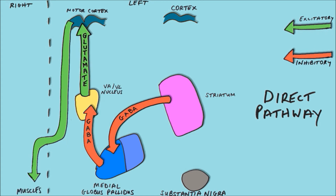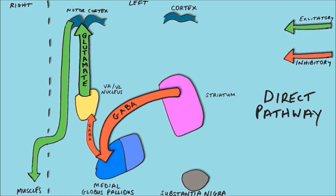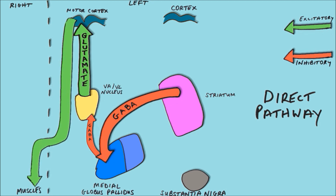From this we can see that if we increase the activity of the striatum, it will inhibit the medial globus pallidus to a greater degree. This will reduce the inhibiting effect of the globus pallidus on the VAVL nucleus of the thalamus, allowing the thalamus to more strongly excite the motor cortex. This ultimately allows the motor cortex to stimulate the muscles more, creating more motor activity.